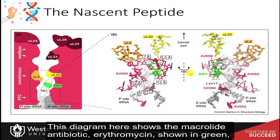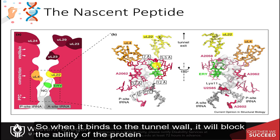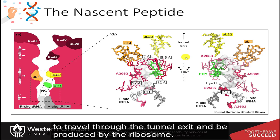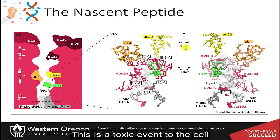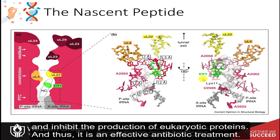This diagram here shows the macrolide antibiotic erythromycin shown in green binding with the tunnel wall. When it binds to the tunnel wall, it will block the ability of the protein to travel through the tunnel exit and be produced by the ribosome. This is a toxic event to the cell and will cause bacterial cell death. Notably, erythromycin does not bind to eukaryotic ribosomes and thus is an effective antibiotic treatment.